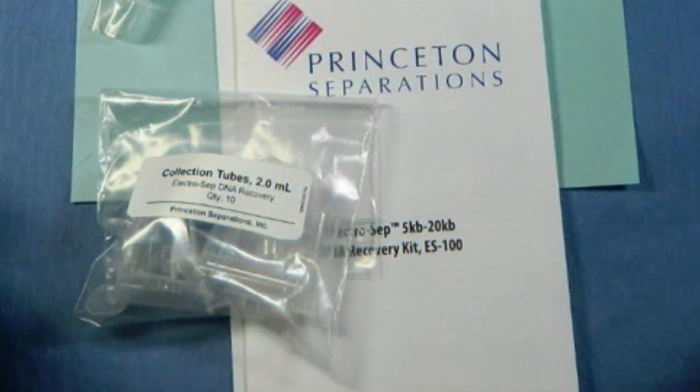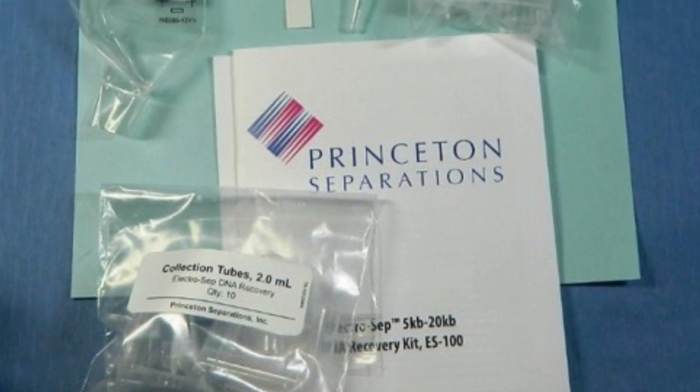ElectroCEP is a product used for size selection in an agarose gel without the need for ethidium bromide or cutting the gel. This video will go over the basic steps in using an ElectroCEP kit.